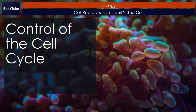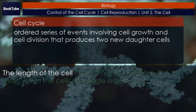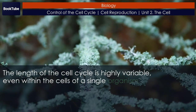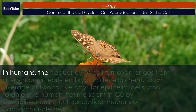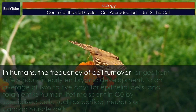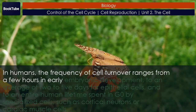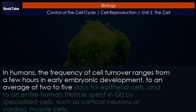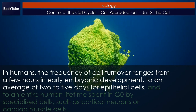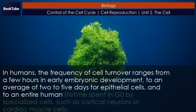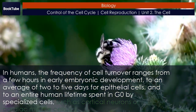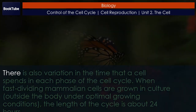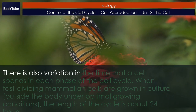Control of the cell cycle: the length of the cell cycle is highly variable even within the cells of a single organism. In humans, the frequency of cell turnover ranges from a few hours in early embryonic development to an average of two to five days for epithelial cells, and to an entire human lifetime spent in G0 by specialized cells such as cortical neurons or cardiac muscle cells.